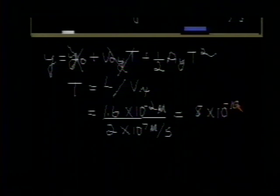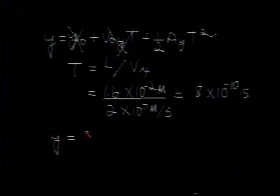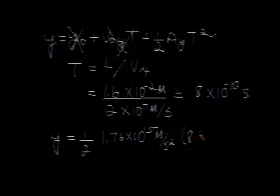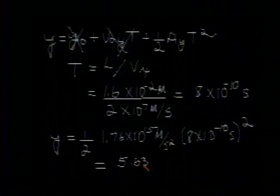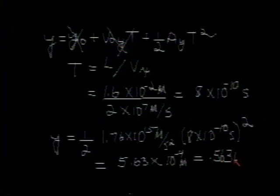Now we can evaluate y. It's simply equal to 1 half the acceleration in the y direction, which we have found to be 1.76 times 10 to the 15 meters per second per second, multiplied by 8 times 10 to the minus 10 seconds squared. If you evaluate that, you should find that this is equal to 5.63 times 10 to the minus 4 meters, which can also be written as 0.563 millimeters. That is the solution to our problem.